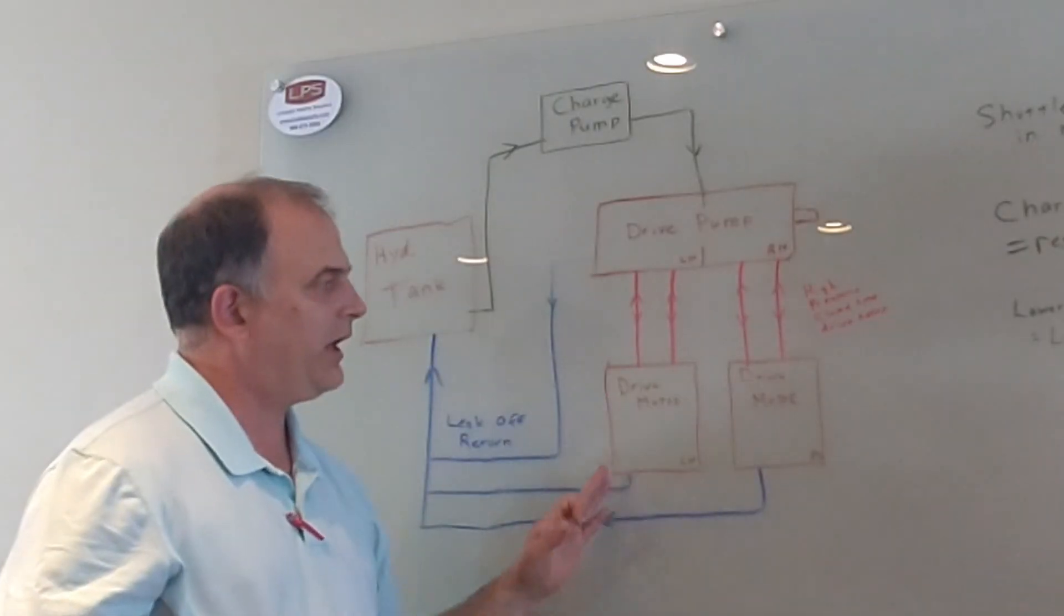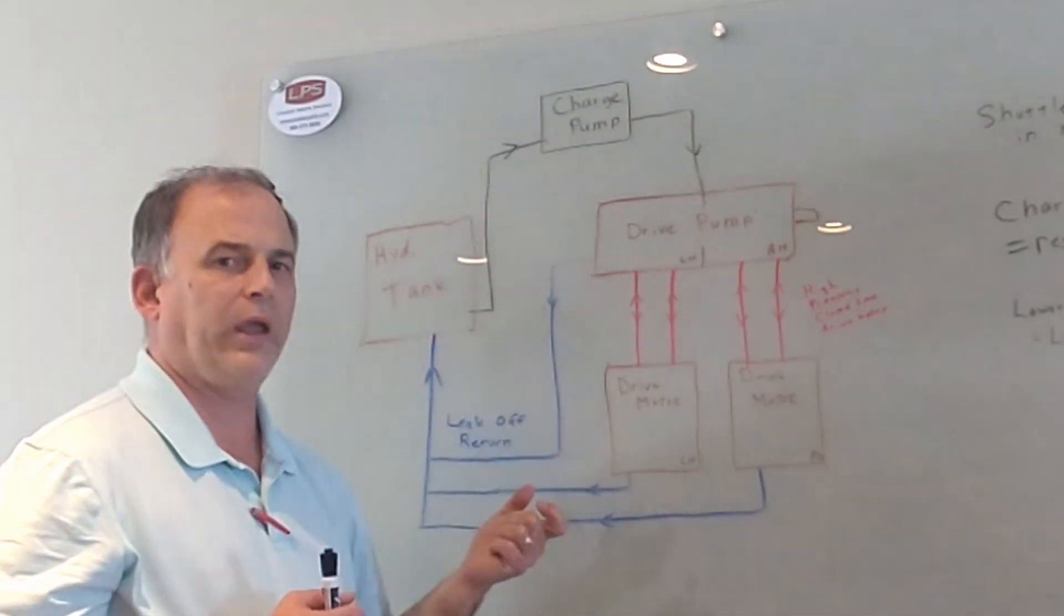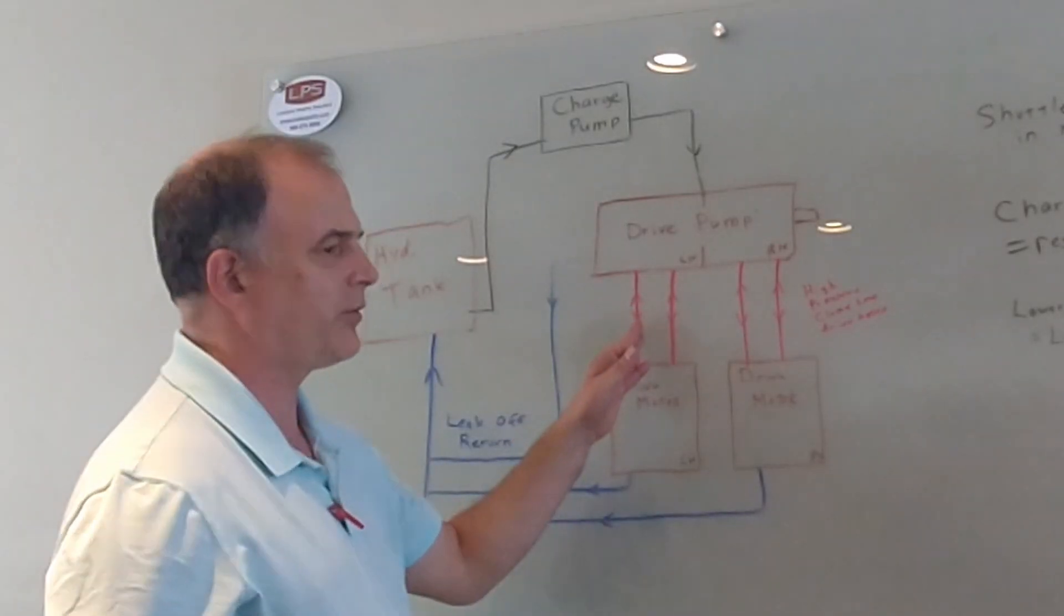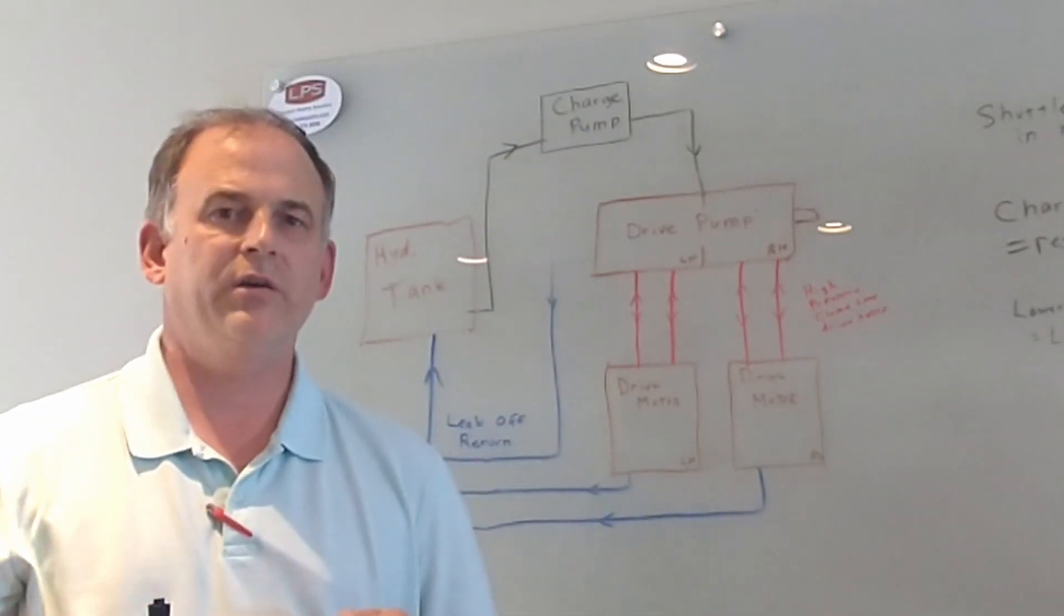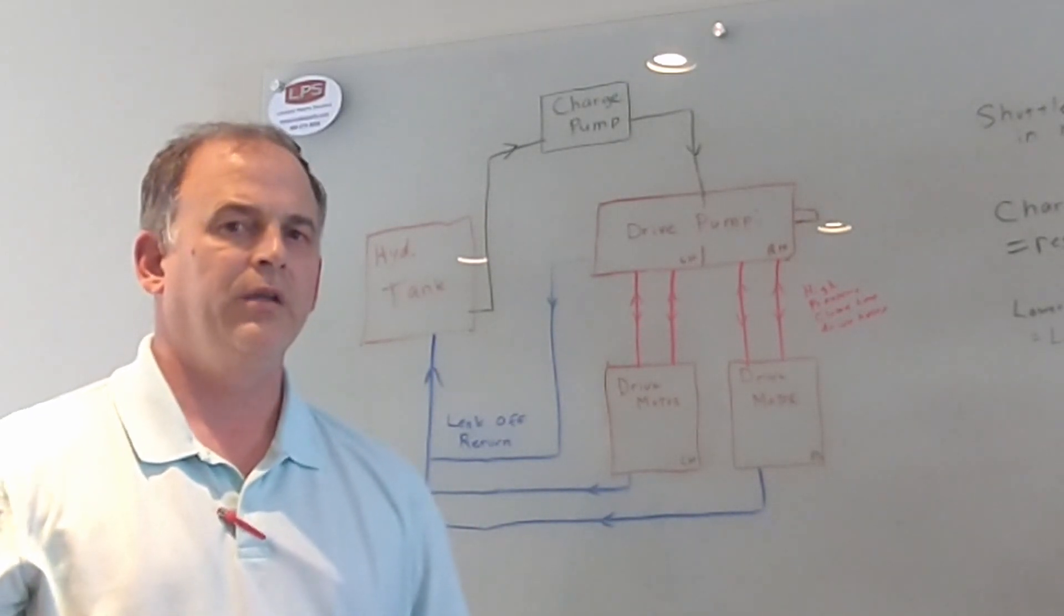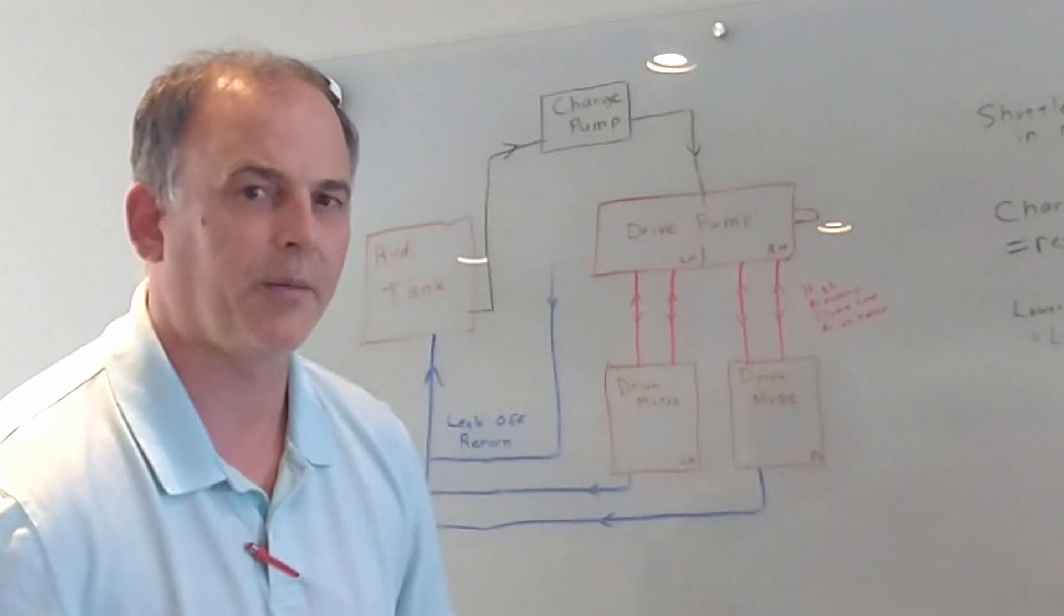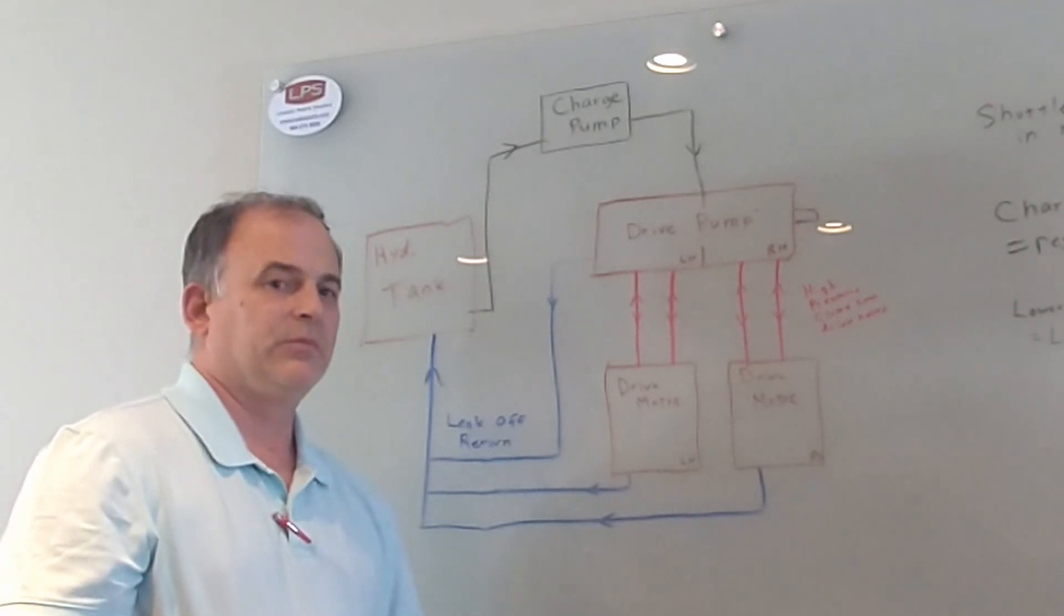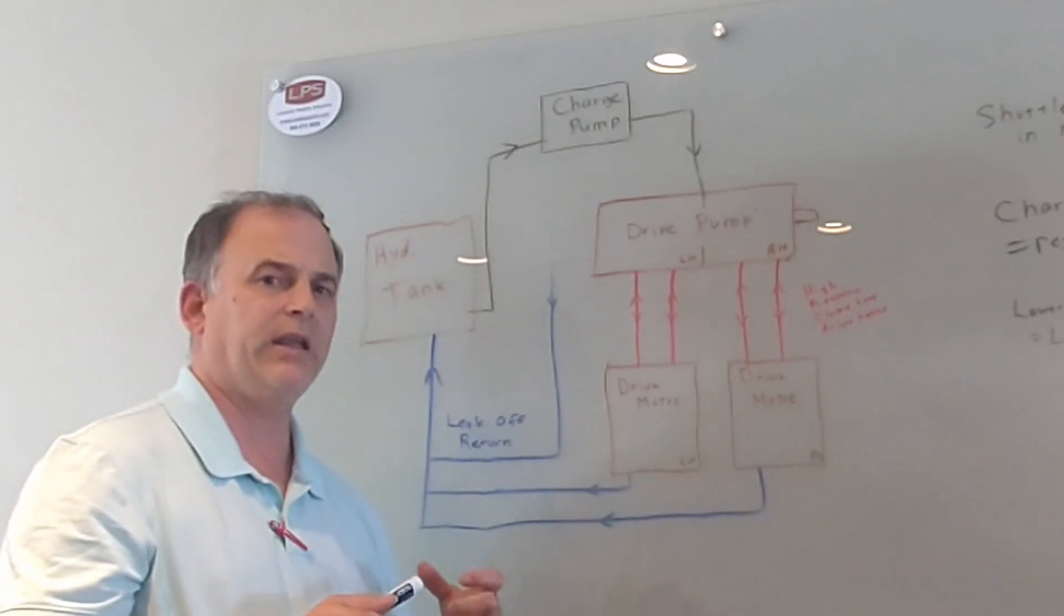So what we do when we're diagnosing a transmission is we pinpoint where the leak-off is happening. Is it happening in the pump? Is it happening in the motor? Is it happening on the right side or the left side? Is it happening in forward or reverse? And then we can have a very good idea on which component should be replaced, or is there just a simpler problem perhaps. That saves a lot of money in shipping and replacement costs and a lot of downtime, so it's very helpful for us to get this right before we start taking parts off.